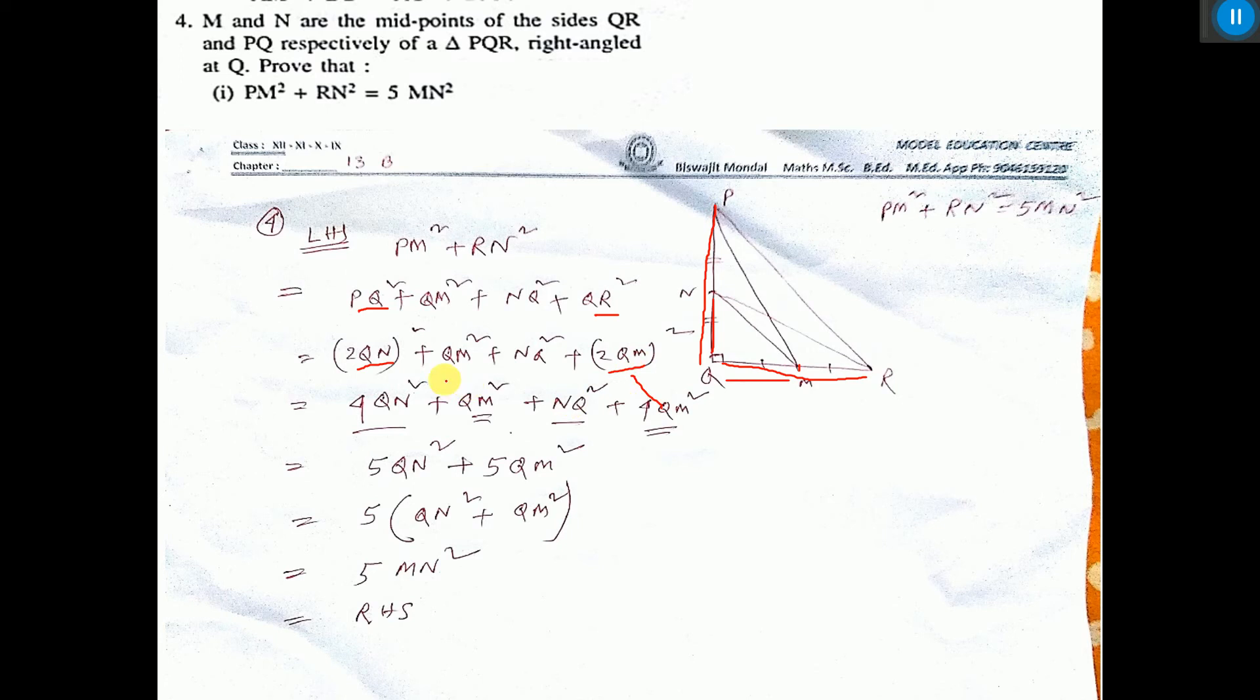So here it is coming 4, here 4. So 4QN and 1QN, that is 5QN. And 1QM and 4QM. So 5QM². Take 5 common.